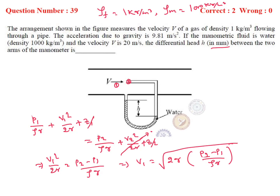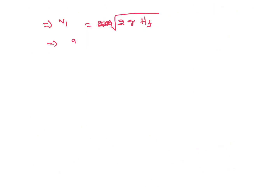We can write V1 in terms of head H of the gas. Given V1 = 20 m/s, so H_gas = V1²/(2g) = 20² / (2 × 9.81) = 400 / 19.62 = 20.38 m of gas. This is the head of gas flowing through the pipe.